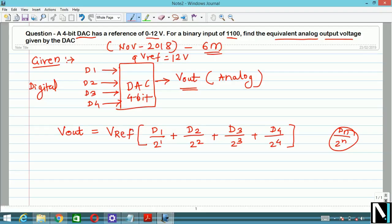Here V reference is given, that is 12 volt. What are the binary input bits? They have mentioned these bits are 1100. So I will write here 12 into bracket 1 upon 2 raise to 1 will be 2, plus 1 upon 2 raise to 2 will be 4, plus D3 bit is 0 so 0 divided by 8, plus D4 bit is also 0 so 0 divided by 16.